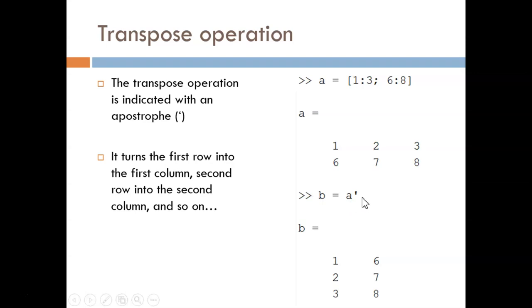Then, we transpose A and store it to B. Notice that B is now a 3x2 matrix. The size was flipped, and the first row of A became the first column of B.